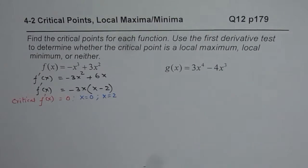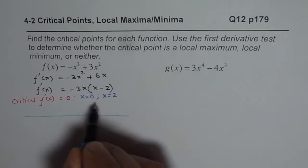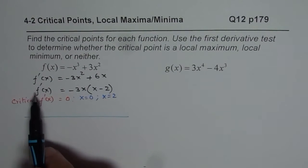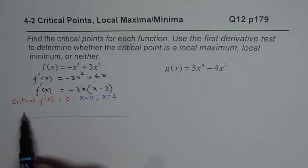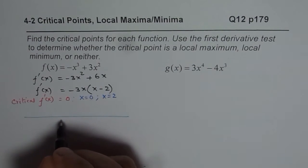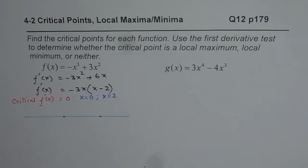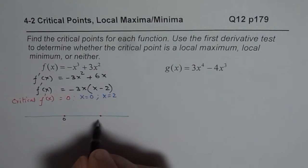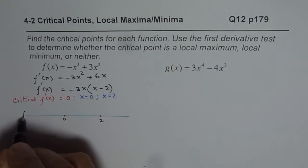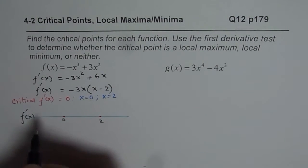We have two critical numbers: x equals 0 and x equals 2. Now we will analyze on either side of these critical numbers whether the derivative changes from increasing to decreasing, or decreasing to increasing. We are testing the derivative of the function, so let us take test points.